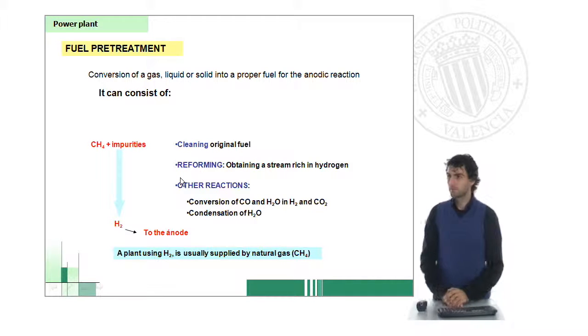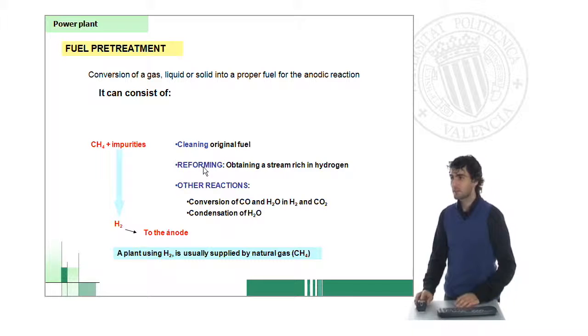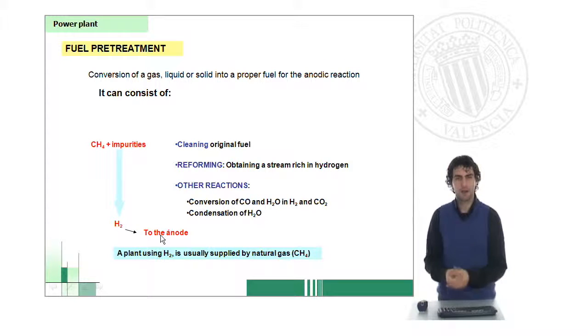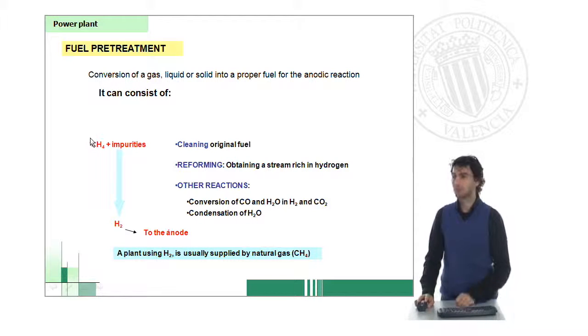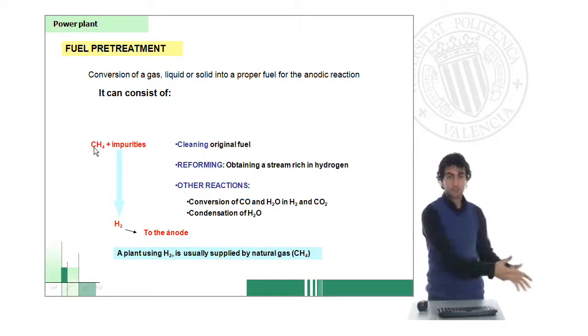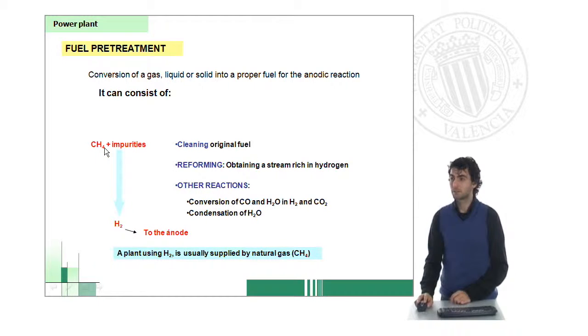So what is fuel pretreatment? Fuel pretreatment basically consists of cleaning the original fuel, reforming the fuel, and further converting what we have previously into a very pure hydrogen stream. Basically, we need to have a high-quality product, hydrogen, before we can use it in the fuel cell. Because we're in these operations at big scale, it's very common to use natural gas which comes from pipelines. We don't know the quality of this natural gas, so it's good if we can just ensure that it's quite clean.